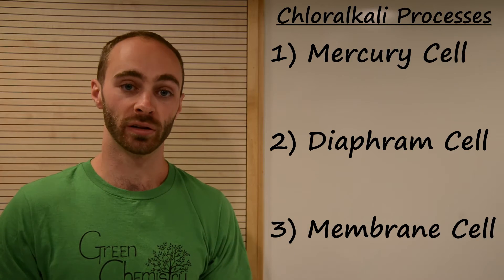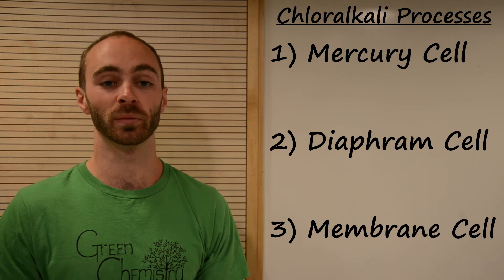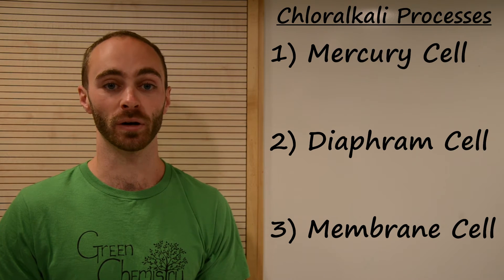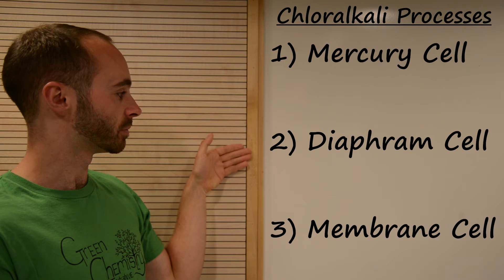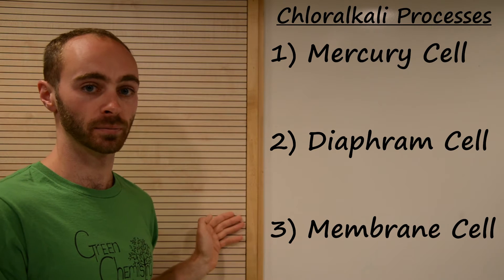So John, what cool experiment are we going to do today to demonstrate a safer synthesis of chlorine? Well, we're going to describe the chloralkali reaction used to produce chlorine and discuss how far it has come in the last 100 years. Currently, there are three competing methods for implementing the chloralkali process: the mercury cell, the diaphragm cell, and the membrane cell.